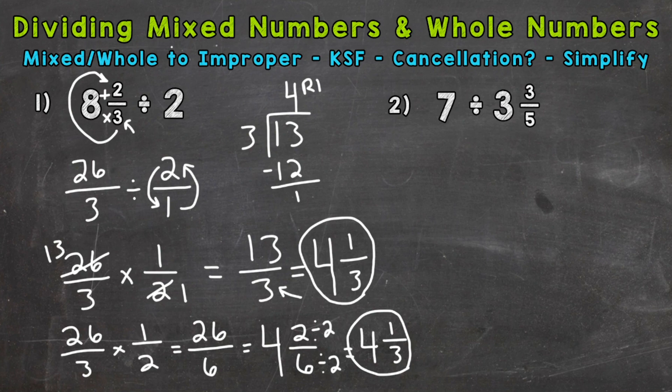So on to number 2. Where we have 7 divided by 3 and 3/5. So again, first thing we need to do is change any mixed numbers or whole numbers to improper fractions. 7 is a whole number. So we can just put it over 1. Divided by 3 and 3/5. We start at the bottom, work our way up. We multiply and then add. So 5 times 3 is 15 plus 3 is 18. Keep our denominator of 5 the same.